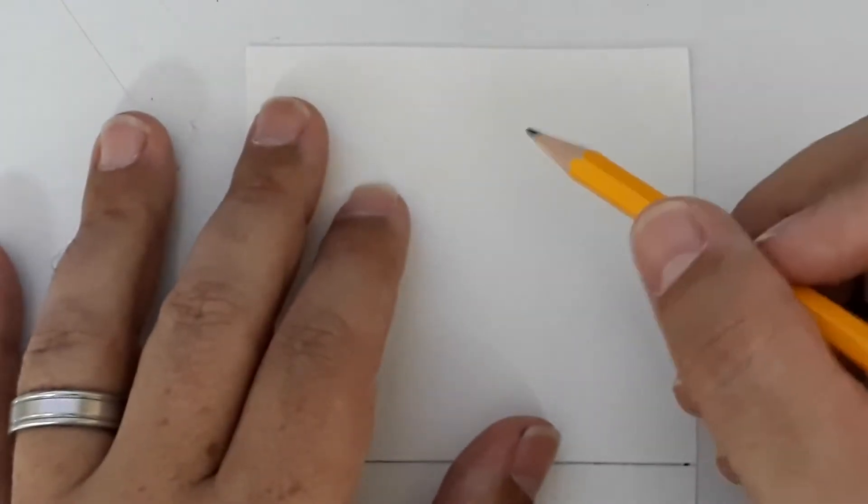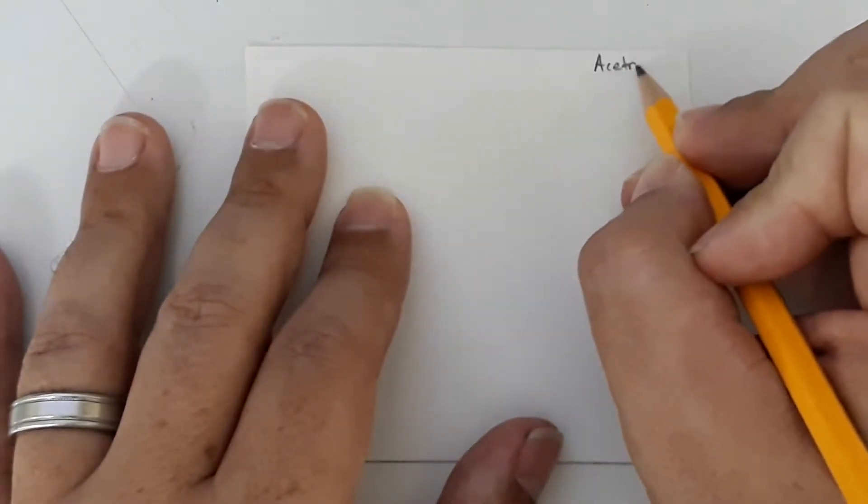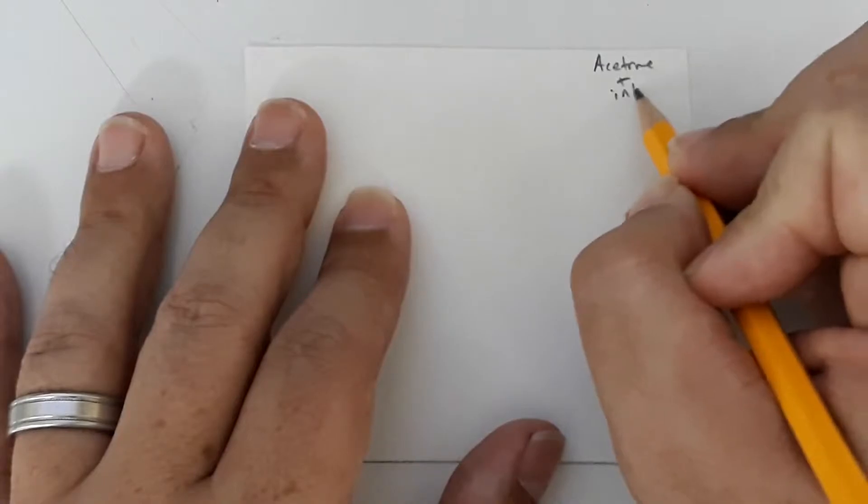Remember to always label your paper. So this one will go into my acetone mobile phase, and I'm using this for inks so I'm going to label it acetone and ink.